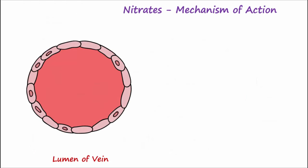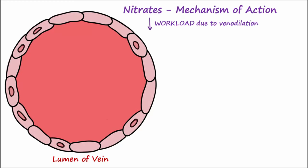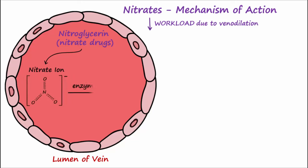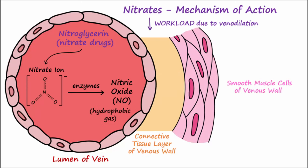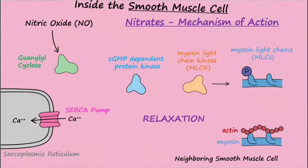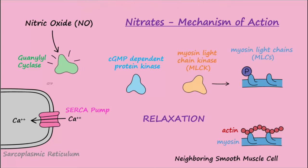Nitrates reduce the workload on the heart by causing venodilation. Nitroglycerin and other nitrate drugs release nitrate ions. These ions are converted to nitric oxide by enzymes in the blood. Nitric oxide is a hydrophobic gas with a short half-life that then diffuses from the blood to the inside of neighboring smooth muscle cells. Inside the smooth muscle cells, nitric oxide activates the enzyme guanylyl cyclase, which then converts GTP into cyclic GMP.